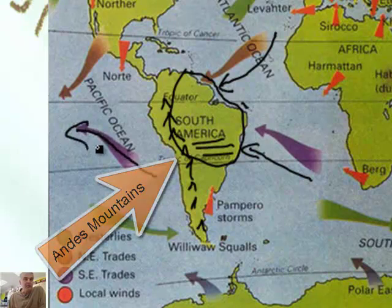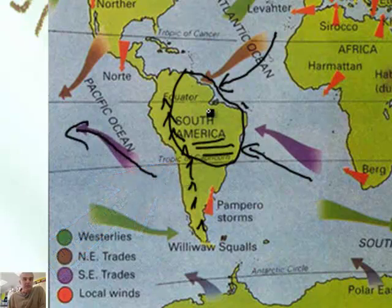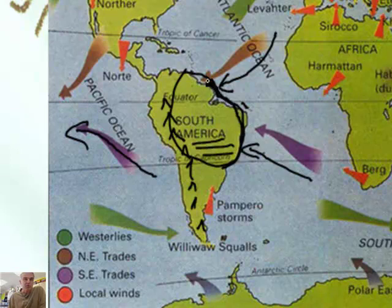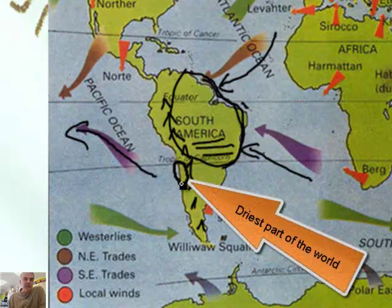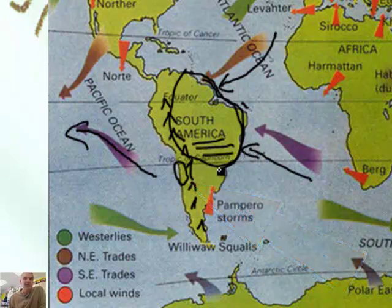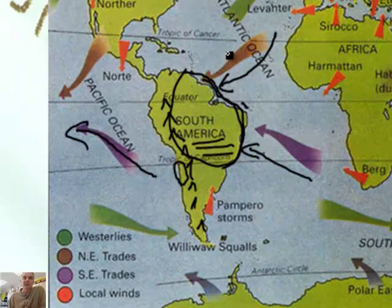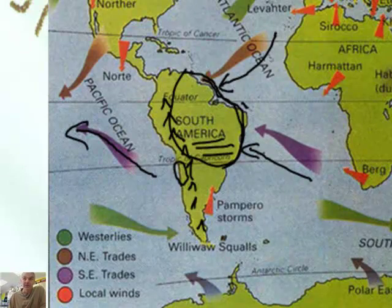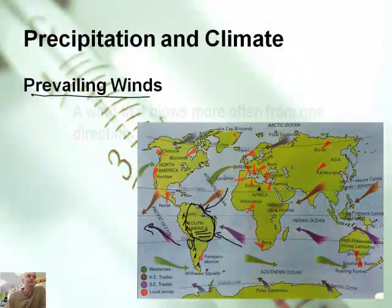Right through here, we have the wind moving away. Interestingly enough, you have this rain forest, which is super wet. And then right here, you have the driest place in the entire world, even though it's on the coast, because it has to do with the prevailing winds. When winds flow from the ocean to the land, it's going to make the place wet. So it's all about the moisture of the prevailing winds.